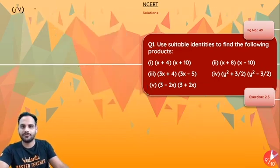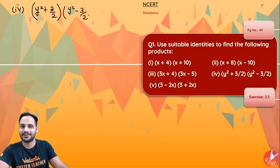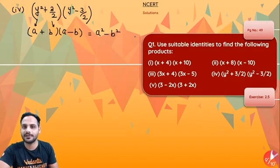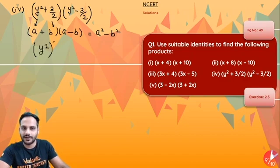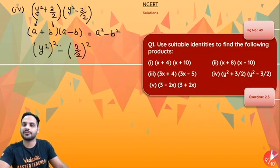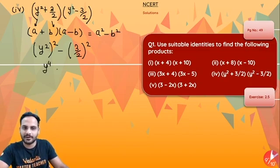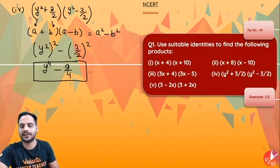Fourth one is y square plus 3 by 2 into y square minus 3 by 2. You can clearly see if y square is a and 3 by 2 is b, so it is a plus b into a minus b, and we know it is equal to a square minus b square. So this multiplication will be equal to y square whole square minus 3 by 2 whole square. So y raised to the power 4 minus 9 by 4 is your answer.